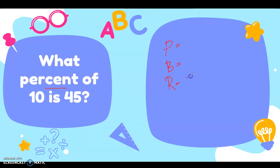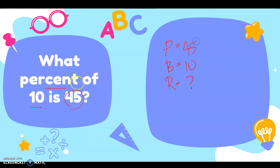Now for the percentage and the base — which is the base: 10 or 45? The base is the total, but that doesn't mean the base is always bigger than the percentage. Using our keyword, before the word 'of' there is 10, so 10 is the base. After the word 'is,' we have 45, so 45 is the percentage. So the percentage is 45, the base is 10, and the rate is missing.